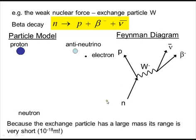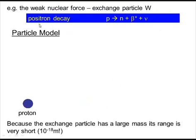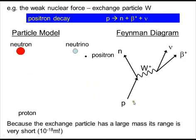Here's our third one - positron decay. Very similar. We've just got a proton. The proton produces a W particle as well, turns into a neutron.